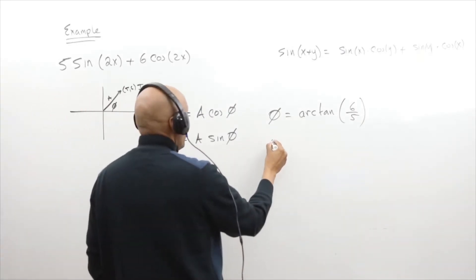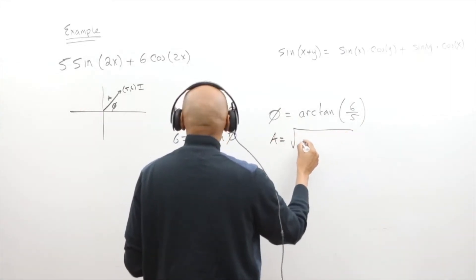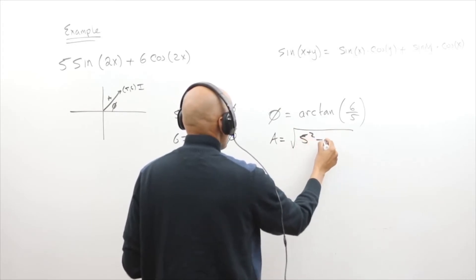The amplitude A is going to be the square root using Pythagoras theorem. 5 squared plus 6 squared.